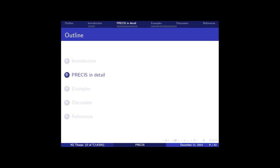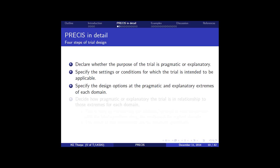So consider four steps of trial design. And it's important to decide up front whether your primary purpose is to deliver a pragmatic or explanatory trial. Because then, you know, you want to know what your target is. So specify the settings or conditions for which the trial is intended to be applicable. Specify the design options at the pragmatic and explanatory extremes of each domain. Decide how pragmatic or explanatory the trial is in relationship to those extremes from each domain. And that's done by considering additional removal of restrictions that shift the trial's position along the continuum.